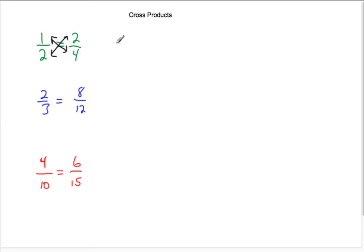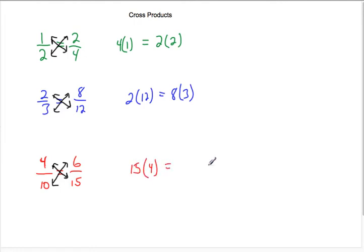You can see that 4 times 1 is equal to 2 times 2. And in this one, 2 times 12 should be equal to just 24, which is 8 times 3, also 24. And in the final one, we have 10 and 6 multiplied together, which should be equal to 4 times 15. So 15 times 4, which is 60, is equal to 10 times 6, which is 60. So whenever you have a proportion, the cross products are going to be equal.